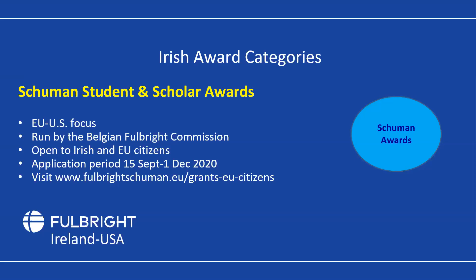The Schumann awards are run by the Belgian Fulbright Commission and are open to students and scholars, including Irish and EU citizens. These are relevant if your work has an EU or US focus. The application period is slightly different — 15th September to 1st December. You can visit the Belgian Commission's website if interested, and please let us know if you're planning to apply. Note that you can only apply to one commission per year, so you'll need to choose between the Irish and Belgian commission.